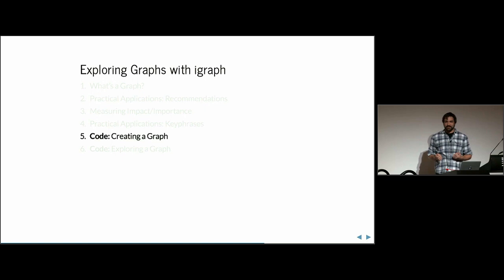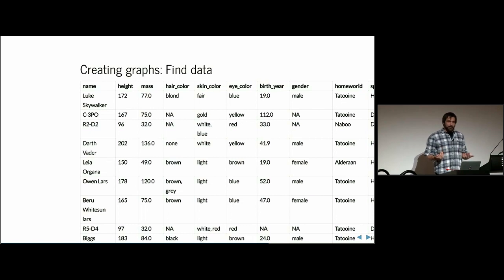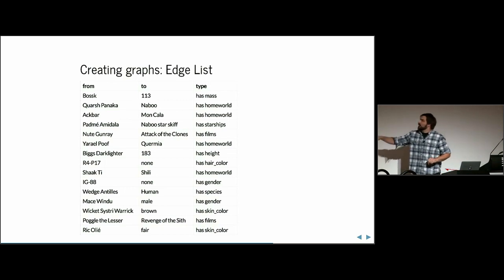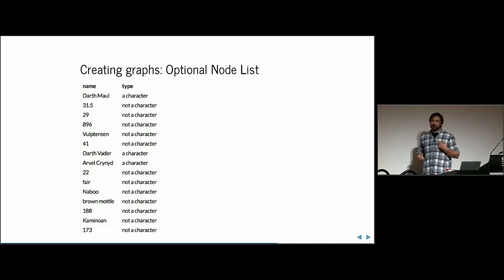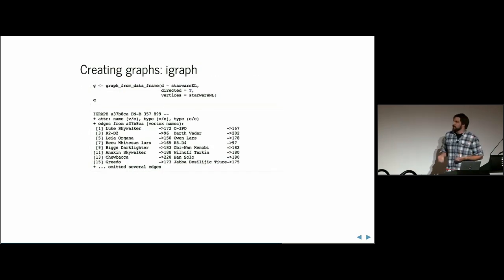Now I'm going to get into the code. Everything can be done in igraph and it's awesome. This is a Star Wars dataset from DeepFire. If you're familiar with the tidyverse concept, this is a wide dataset — we want to convert it into a long dataset, which is the idea of an edge list. The first column always represents where the edge is coming from, the second column where it's going to, and any subsequent column is an edge attribute. If you want to assign node attributes, you'll also need a node list where the first column is the node name and subsequent columns are attributes.